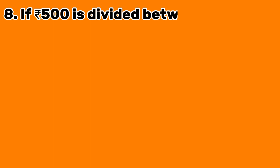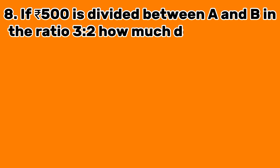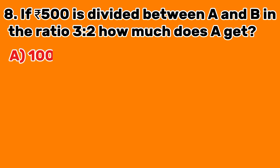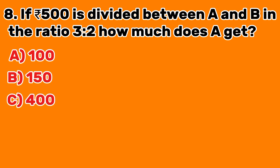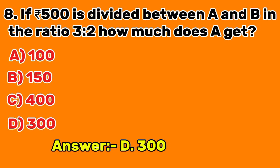Question 8: If 500 Indian rupees is divided between A and B in the ratio of 3 to 2, how much does A get? A. 100. B. 150. C. 400. D. 300. Answer D: 300.